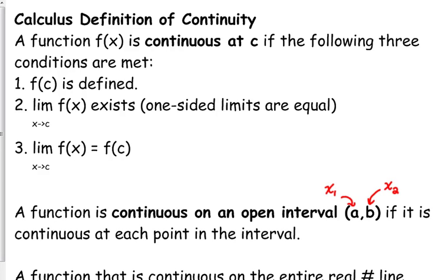And then the third condition puts the first two together. Not only does your limit have to exist and your function have to be defined, they have to have the same value in order for the function to be continuous. In order for the function to be continuous, your limit has to have the same value as the function at whatever point you're talking about.